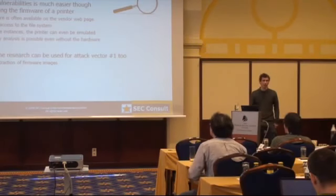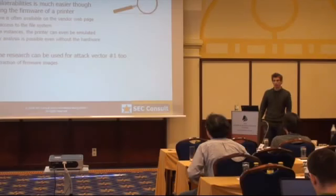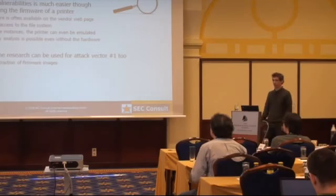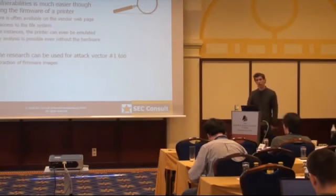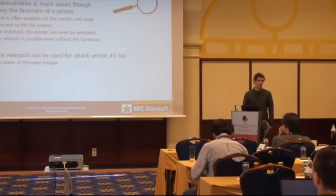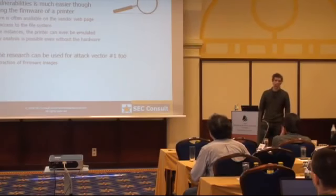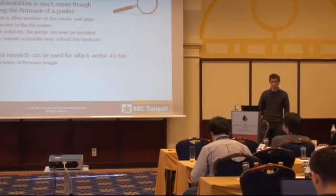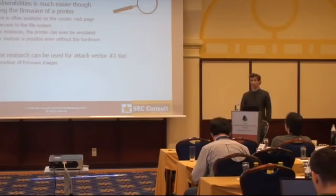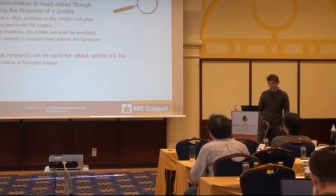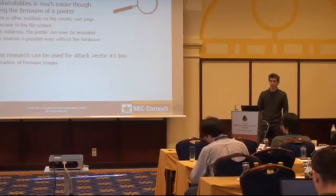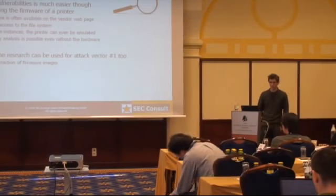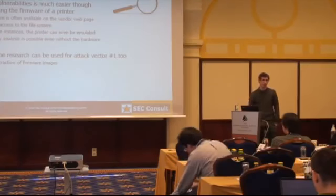The focus of this talk is mainly on attack vector number two: using the firmware to find vulnerabilities in printers. Using the firmware makes it a lot easier. The firmware is very often available on the vendor's web page, and many of these firmwares can be extracted to allow access to the file system. Many printers run on Linux. In some instances the printer can even be emulated and all the binaries can be checked for vulnerabilities using fuzzing or grey-box techniques. And the main advantage is that you don't need to own the hardware.